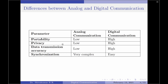Coming to privacy, analog communication systems fail to provide high privacy and therefore provide low privacy. On the other hand, digital communication systems provide quite high privacy. Since the privacy for analog communication systems is low, the security is quite low, whereas for digital communication the security is quite high.